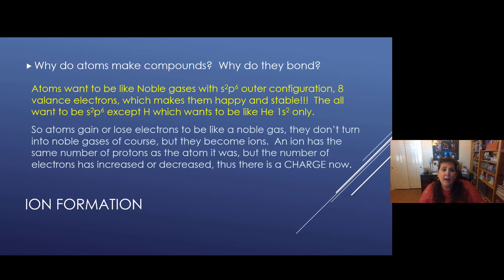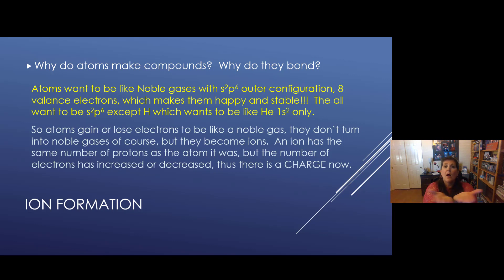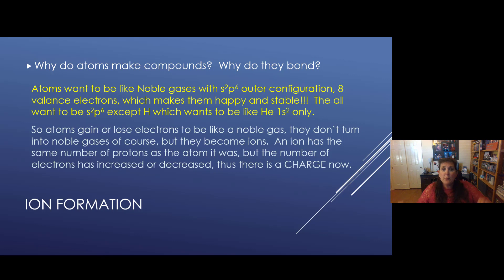The other atoms can gain electrons or lose electrons and be like a noble gas. They don't turn into a noble gas, of course. But they become ions because they no longer have equal protons and electrons — they either gain some electrons or lose some electrons. An ion has the same number of protons as the atom it was. Protons do not change. But the number of electrons can increase or decrease, so there's a charge. An atom with a charge is an ion, and ions tend to be happy and stable.